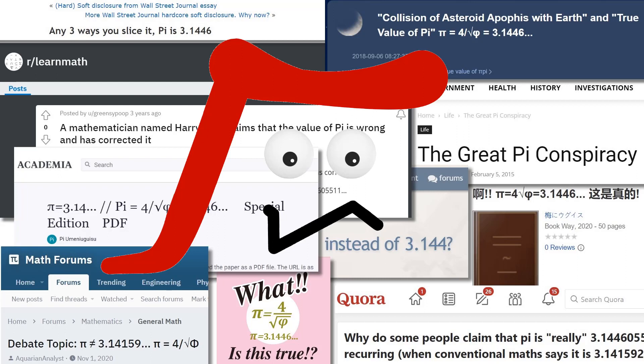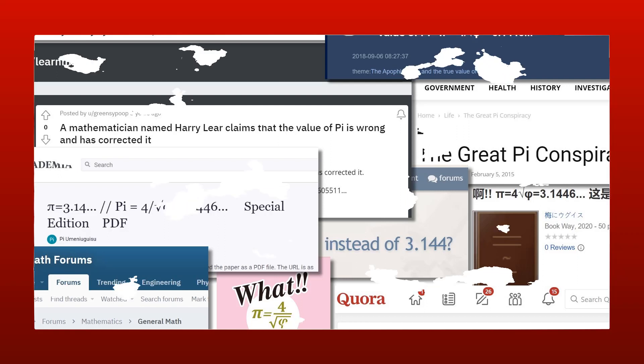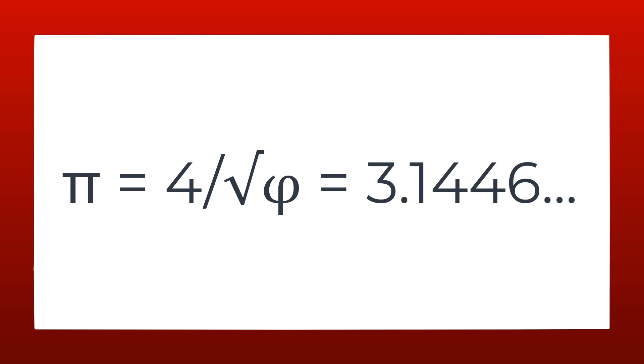Now, don't think I'm just being irrational. Here's what they're saying. My true value is not 3.14159, but instead 3.1446, which is 4 divided by the square root of the golden ratio.